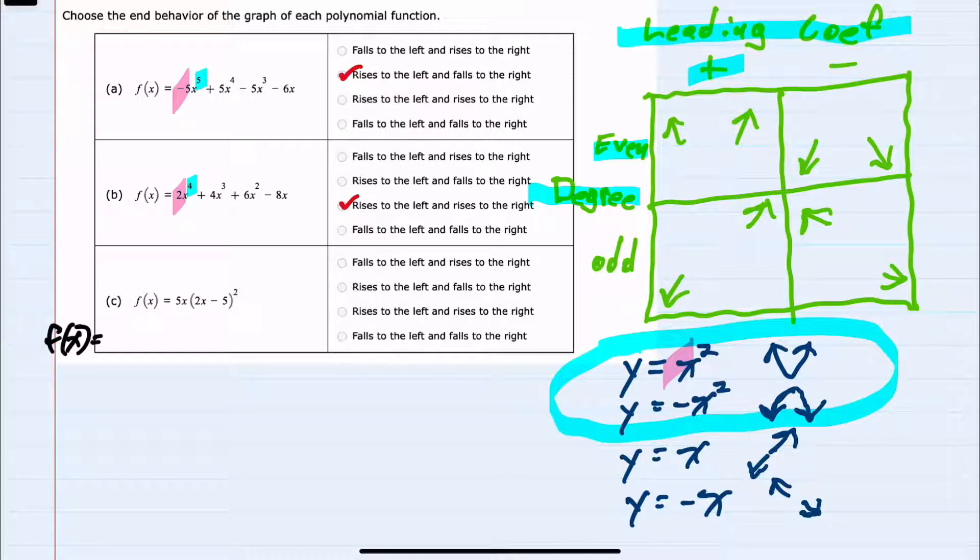So this is f(x) equals 5x times (2x minus 5) times (2x minus 5). I can start to simplify this by multiplying the two binomials.